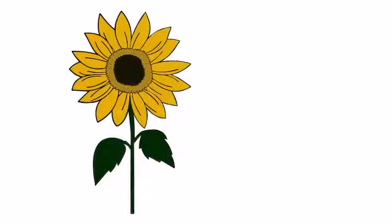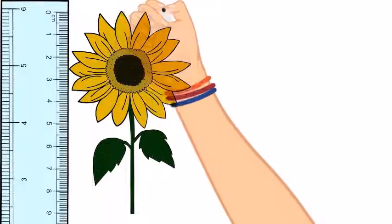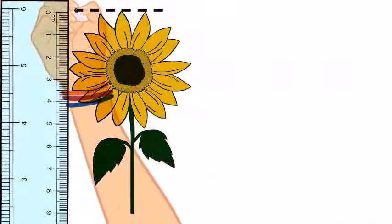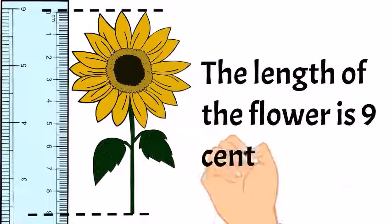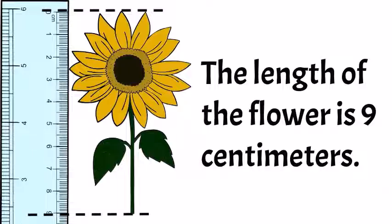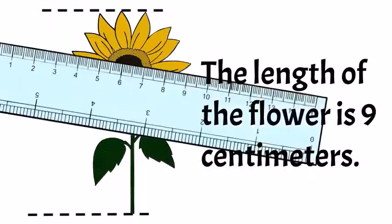So let's try measuring a different way now. This is a beautiful flower, a sunflower. And we're measuring from top to bottom. We're measuring in centimeters. The length of the flower is nine centimeters high or nine centimeters long.